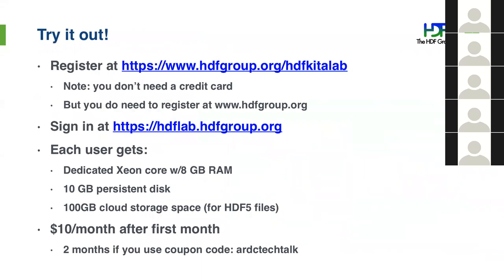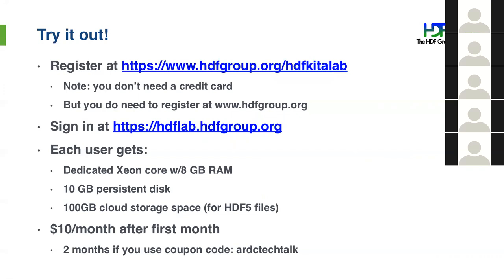You can try this out right now by registering at hdgroup.org/hdfkitalab and signing in at hdflab.hdfgroup.org. Each user gets the equivalent of a dedicated Xeon core with 8 GB of RAM, 10 GB of disk, and up to 100 GB of cloud storage. We charge a minimal fee of ten dollars a month to recoup expenses, but the first month is free, and with the special 'ardz tech talk' coupon code you get two months free.